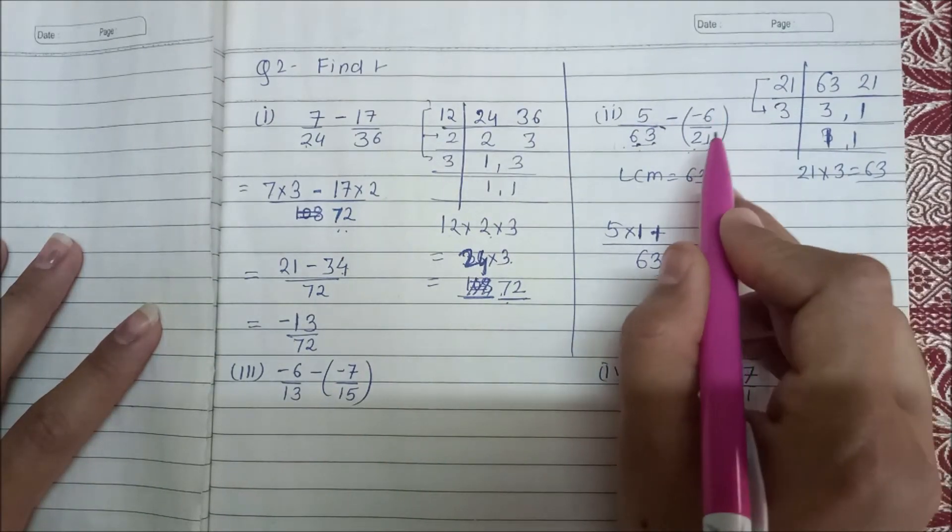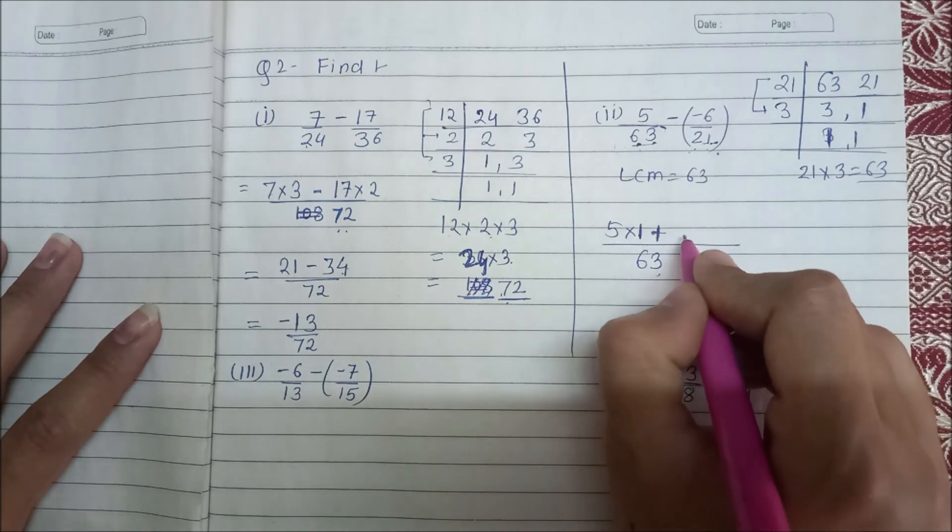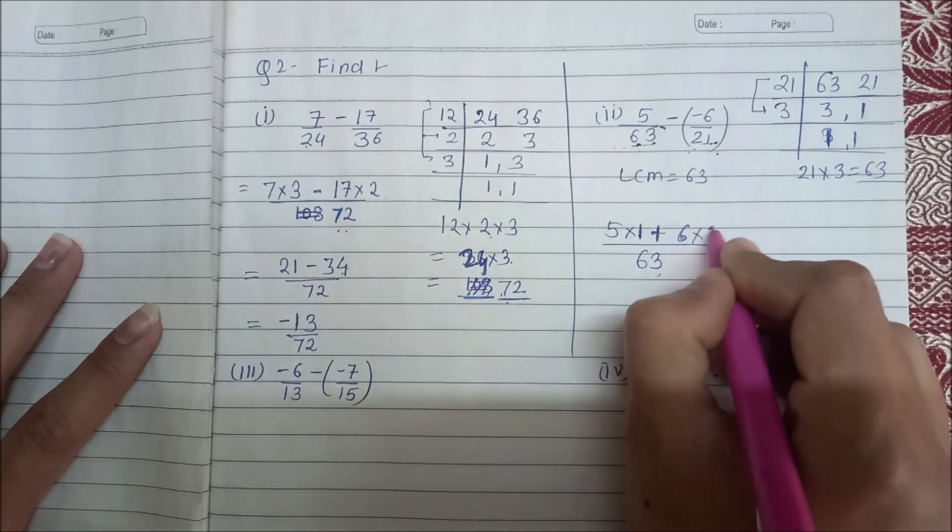Now we will do 21 to 63, which is 3 times multiply. So we will do 6 times 3, multiply.